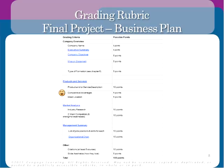The rubric also includes competitive advantage — what makes you different — ideal location, market analysis with industry research and two main competitors, a management summary listing jobs and skills, and an organizational flow chart. The easiest way to build this is as a PowerPoint or Google Slides presentation, with each item on its own slide in the exact order shown, starting with your company overview and name.